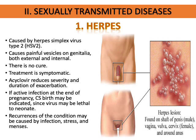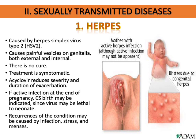If a woman has active herpes at the end of pregnancy, cesarean section birth may be indicated because the virus may be lethal to the neonate. Infection may be triggered by stress or even menstruation. In the photo, you can see the mother's genitalia has active herpes because of vesicles, and when transferred to the baby, blisters appeared all over the body, especially in the trunk area.